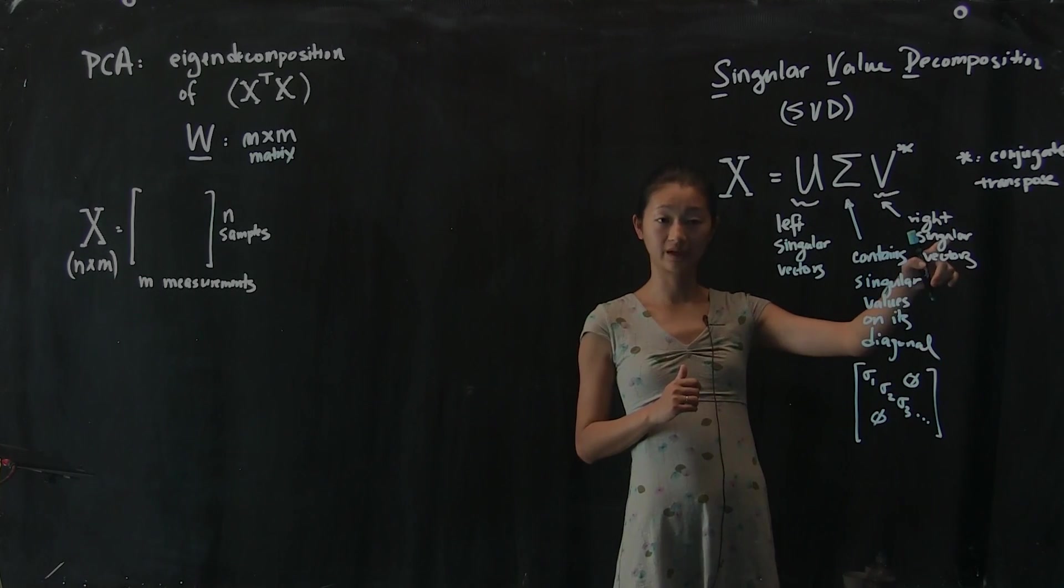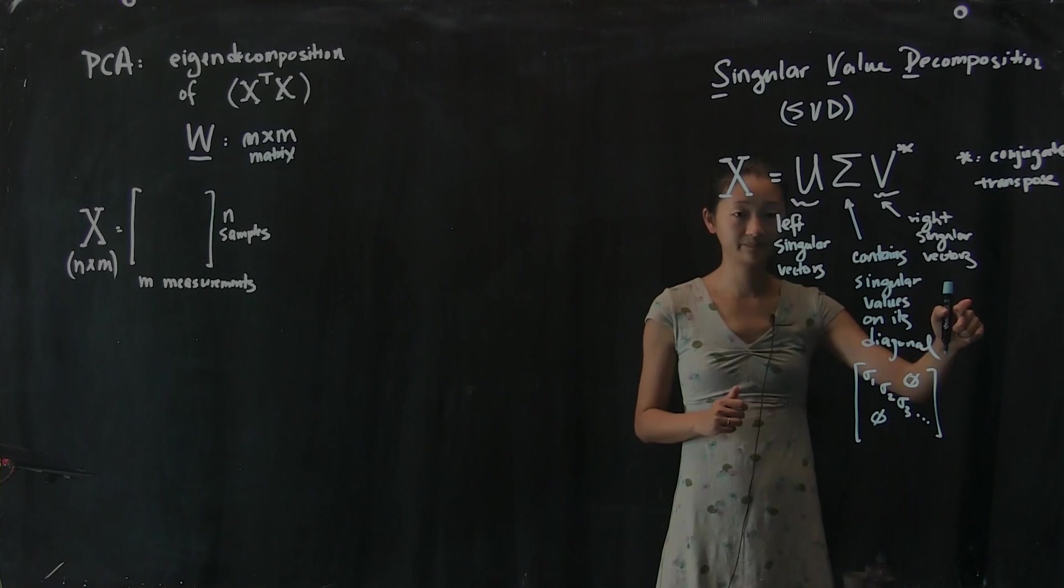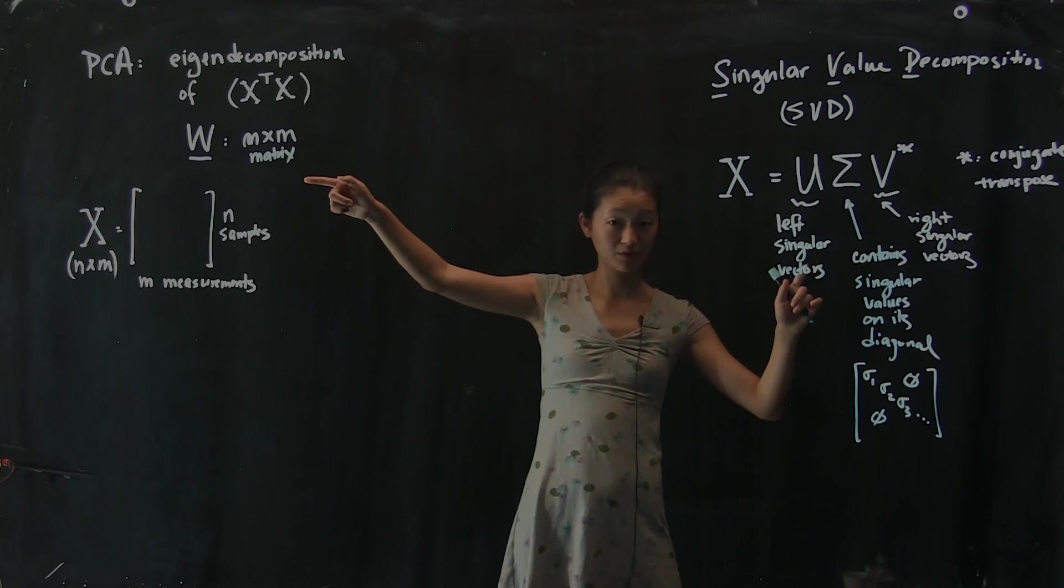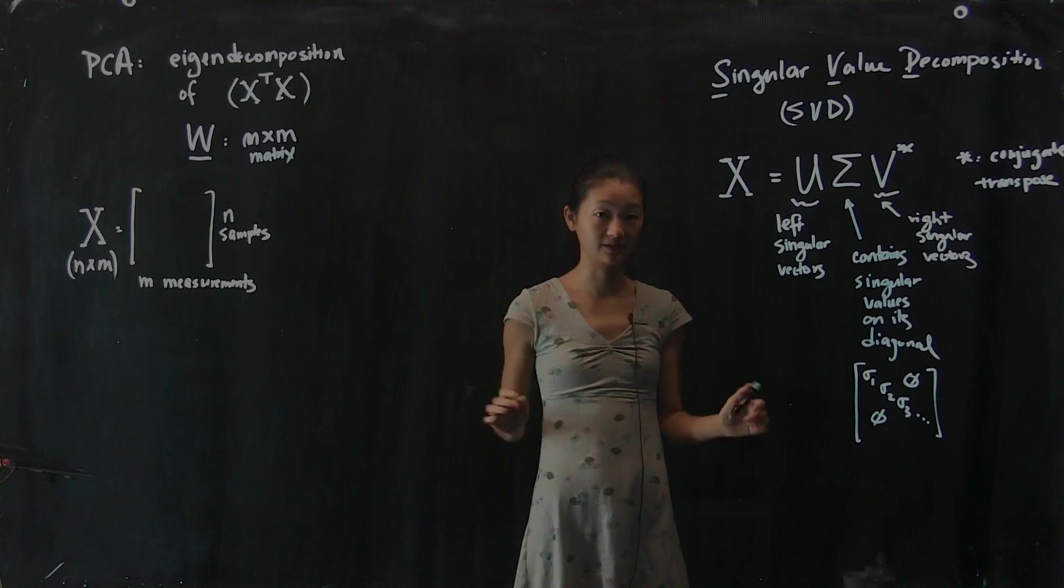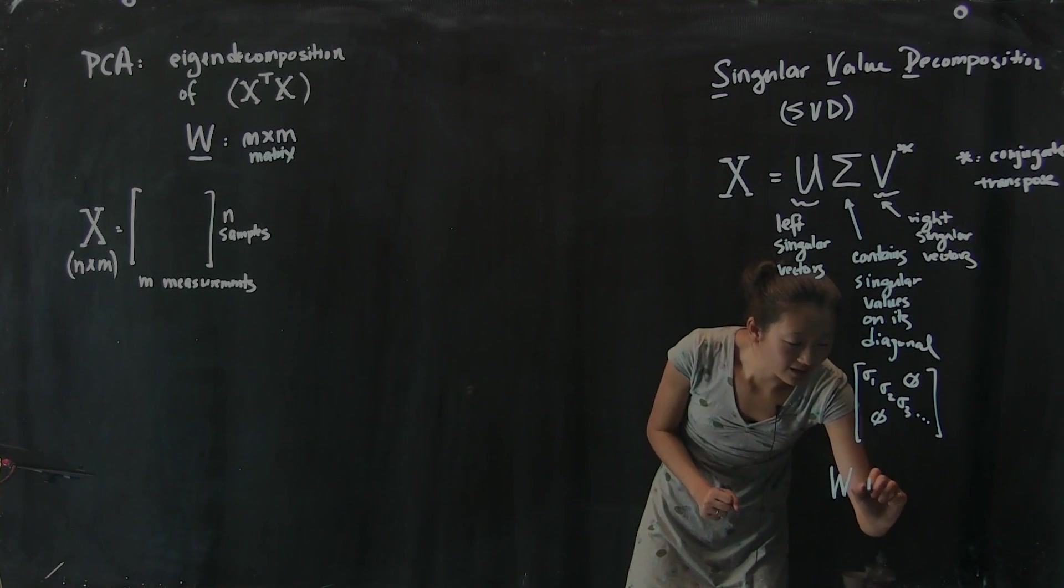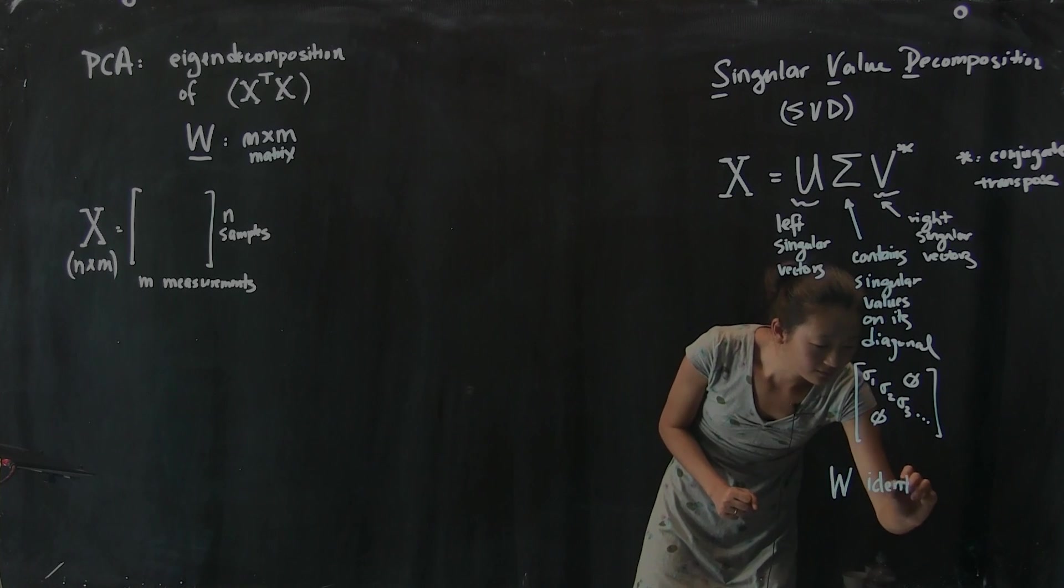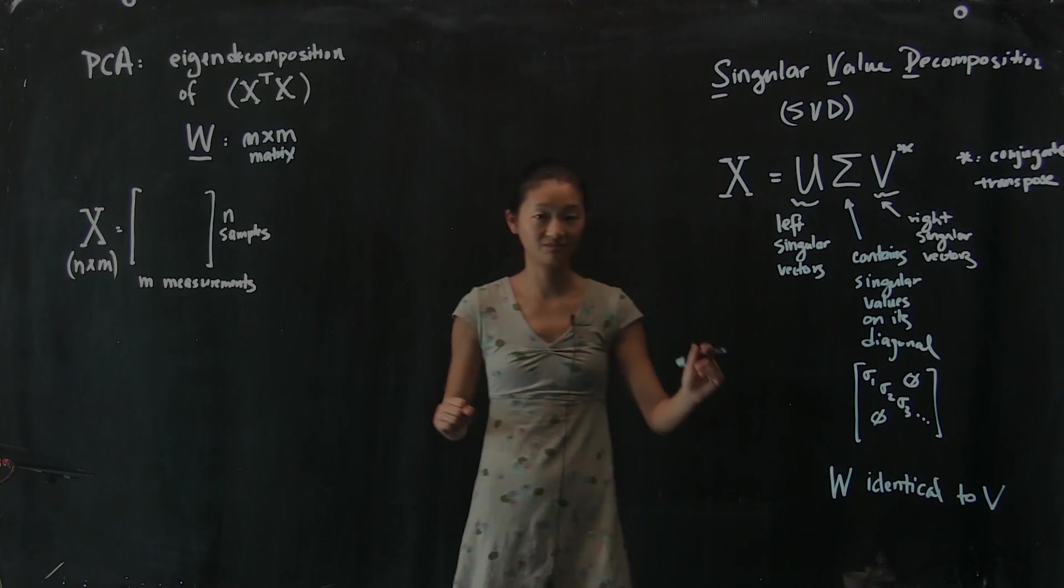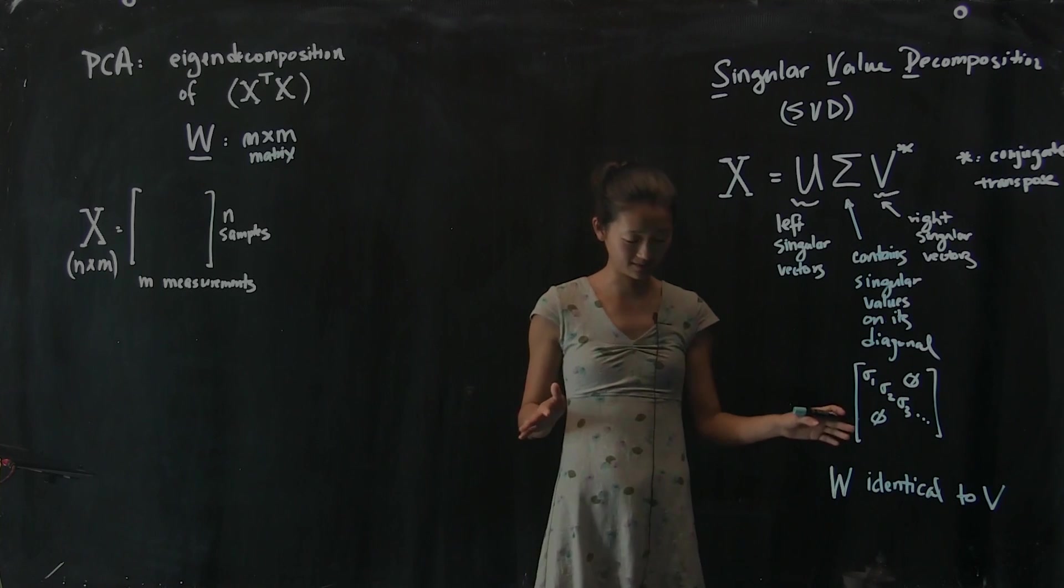So these are our singular values. These are right singular vectors. And it turns out that if you compared this V to our W over there obtained by the other computation, they're identical. V is identical to our W. They're just the same, they're exactly the same.